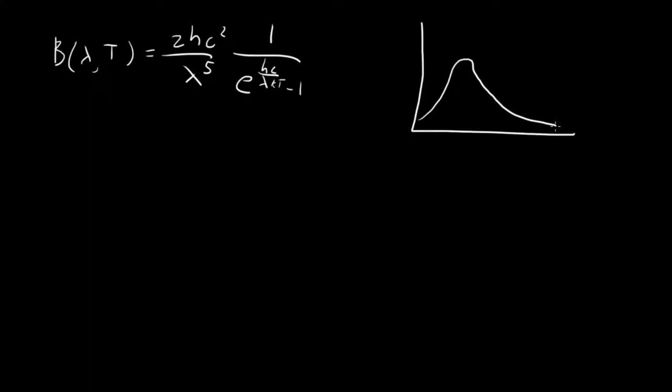So one question you might ask is, this is telling us the distribution of all the wavelengths being emitted by a blackbody. What wavelength corresponds to this peak? What is the wavelength that's being the most emitted? And that's what Wien's law tells us.